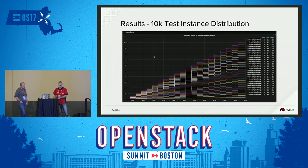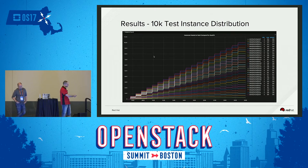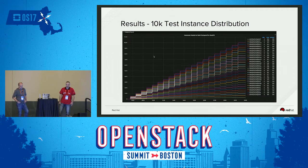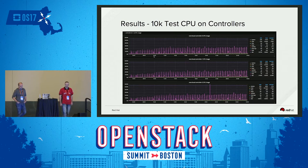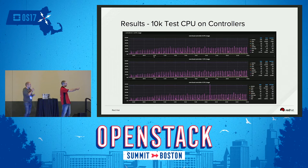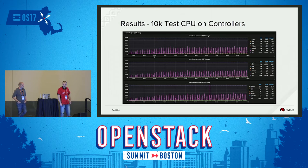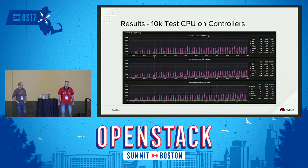Here's the instance distribution. This became a bit of a problem, but in the 10K test I got it as evened out as I could. This is literally every single compute node — around 30 of them — graphed, and whether the number of instances was even across them. We generally got it even, though not perfect. This shows CPU on all the controllers. I love to put as many graphs as I can — I like to see CPU distributed across all three controllers. On each controller, Gnocchi is running, as well as Ceilometer, Nova, Neutron, Glance, and all other OpenStack services.